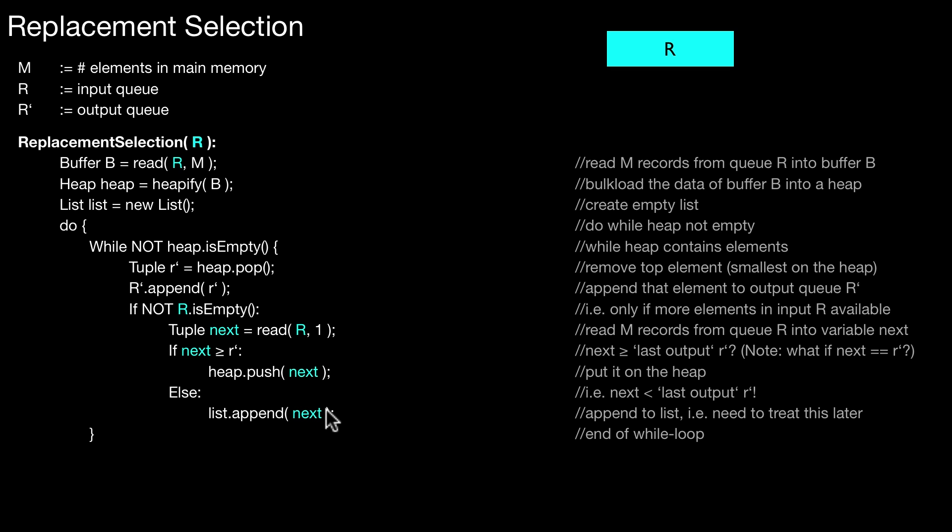So that's all you do. You just keep on popping elements off the heap. Append them to R'. You check whether you have more elements in the input. If that is the case, you read the next element. And do this comparison with the previous element output to R'. If that element that you currently have, if the next element you're looking at, is greater equal to R', just put it on the heap. If not, which means it's strictly smaller than the last element, then you append it to the list. So eventually, in this algorithm, the heap will become empty. While not heap is empty? Then what you do is, you start all over. So if you leave this loop here, this is the end of a run. Then you bulk load the list into a heap again and start all over. You start the next run.